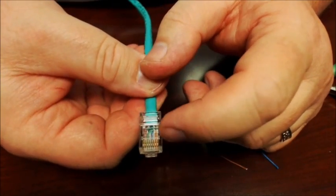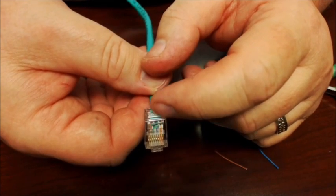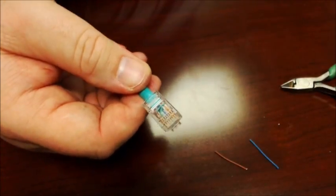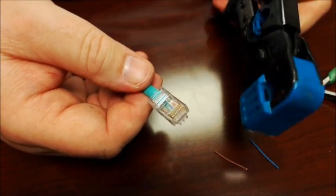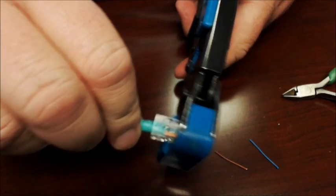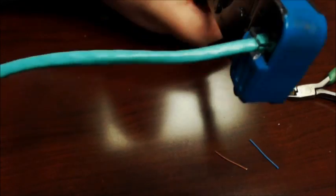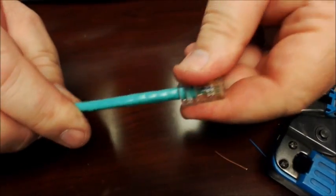So at this point before I crimp it, this is where I just double-check my color codes: white orange, orange, green white, blue, blue white, green, brown white, brown. And then you take your little handy-dandy crimper, put that guy in there like that and give it a crimp. And there you go.